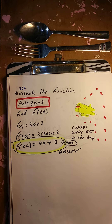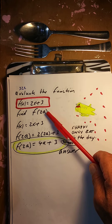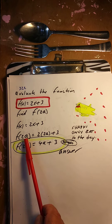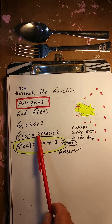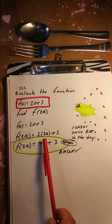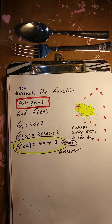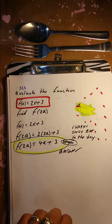Evaluate the function f of x equals 2x plus 3, find f of 2a. Well, that's okay — just substitute 2a in for the x. There's the 2a, 2 is there, and you multiply first: 2 times 2a is 4a plus 3. That's it, we're done.